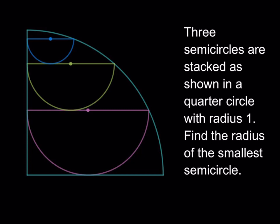Three semicircles are stacked as shown in a quarter circle with radius 1. Find the radius of the smallest semicircle, which is the blue one. We're going to get started with the bottom one. From a previous video, the radius of the largest semicircle is actually square root of 5 over 5, but let's go ahead and find it real quick.